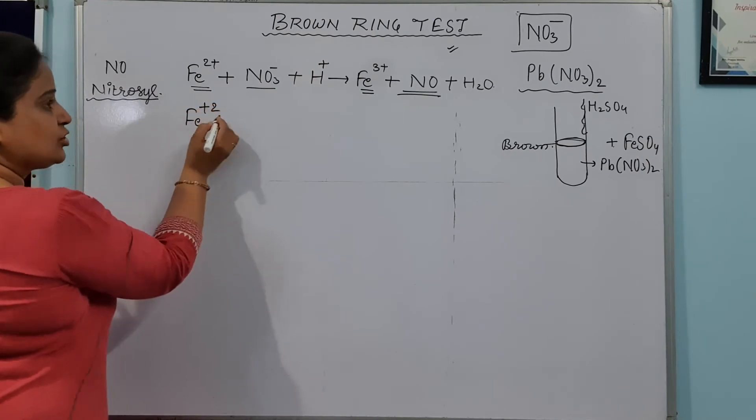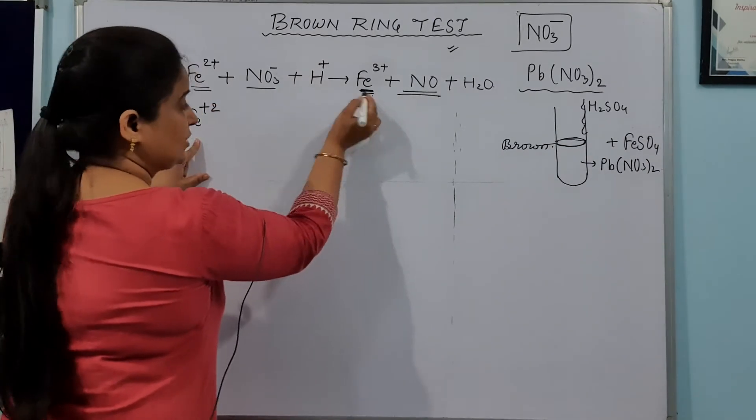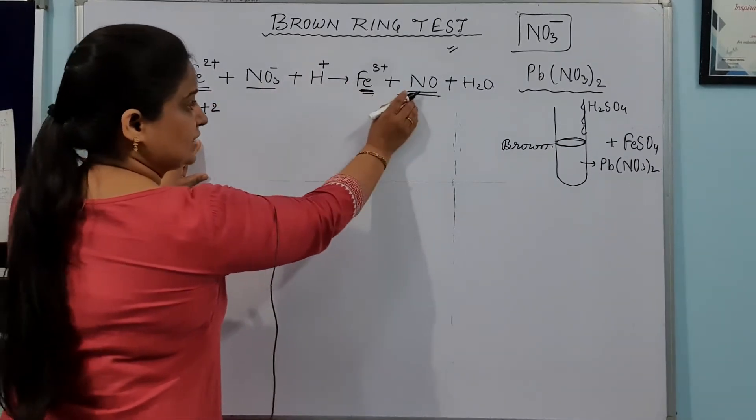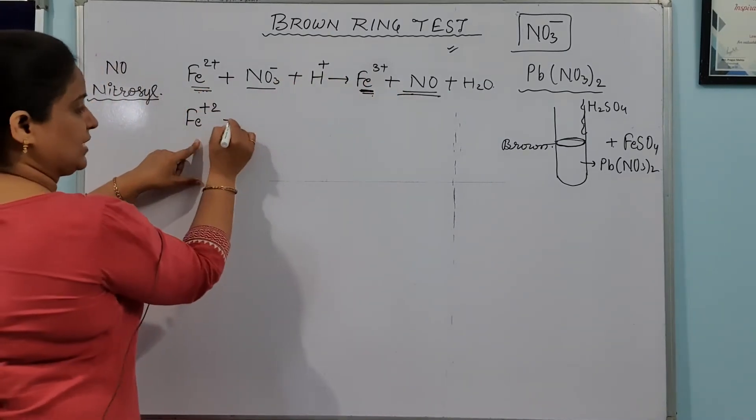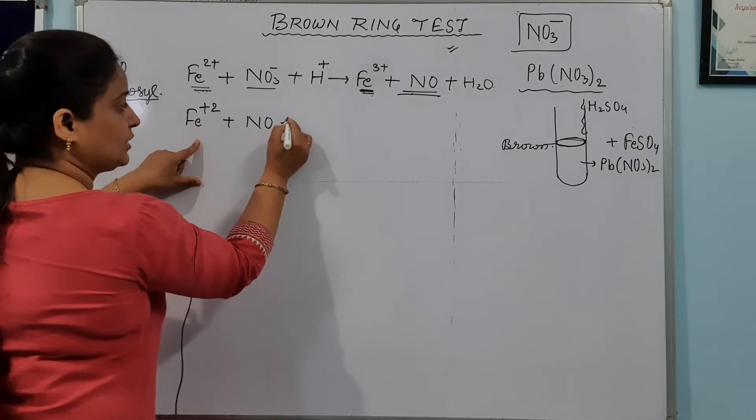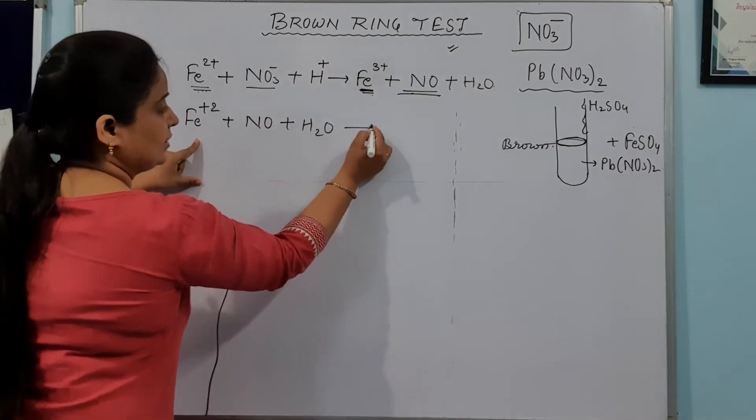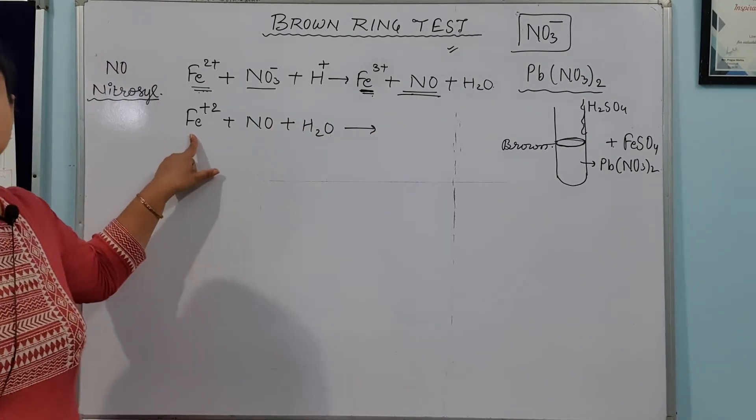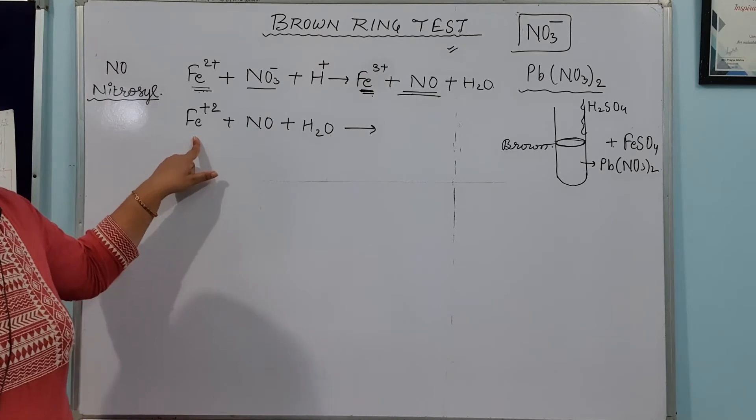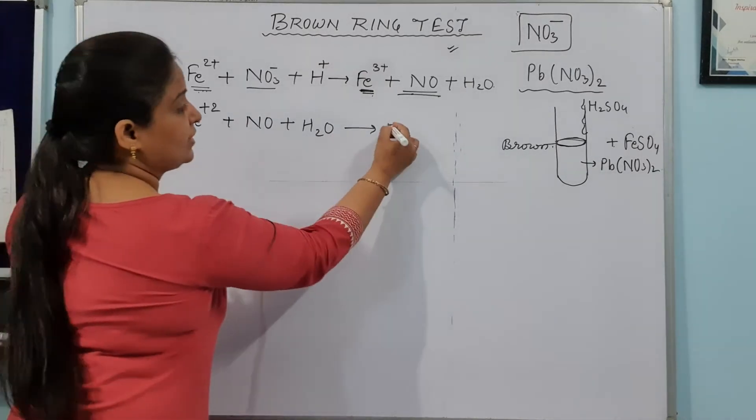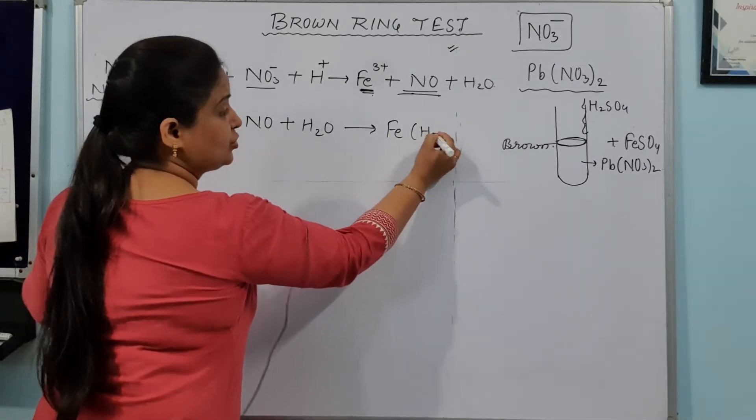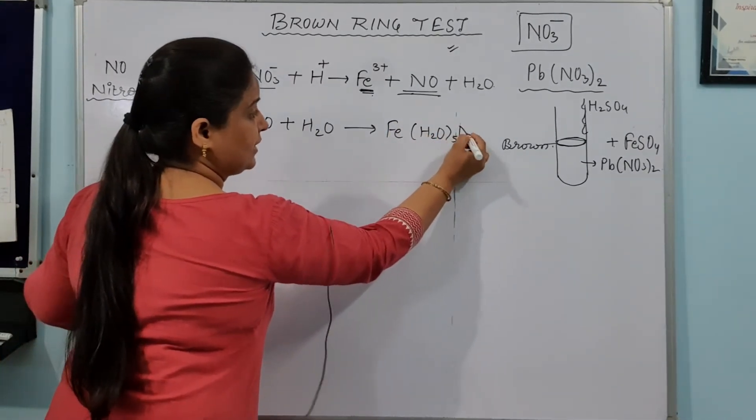Now how does this nitrogen oxide or nitrosyl react with Fe2+? Here it is getting oxidized and this is getting reduced. And this is now reacting with the Fe2+ ions. NO is going to work with Fe2+ ions and you will get a complex and that complex will be brown in color.